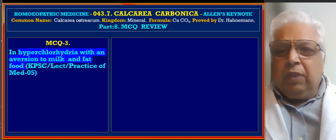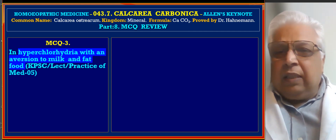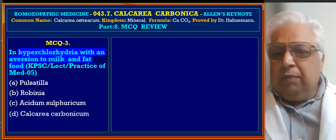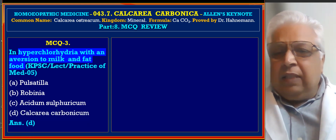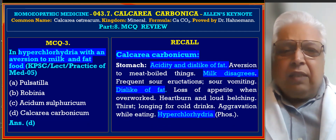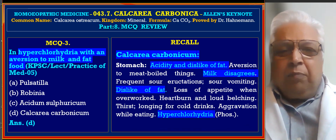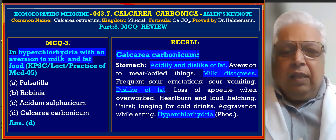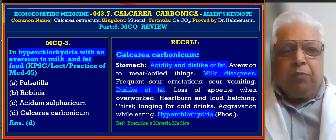MCQ 3: In hyperchlorohydria with aversion to milk and fatty food, the indicated remedy among Pulsatilla, Robinia, Acidum Sulphuricum, and Calcarea Carbonica — answer is D, Calcarea Carb. Reference from Boericke's Materia Medica, stomach section: acidity, dislike of fat, milk disagrees, and hyperchlorohydria.